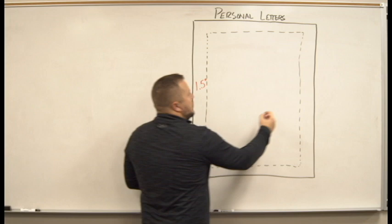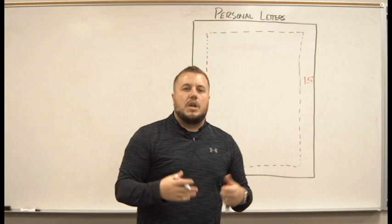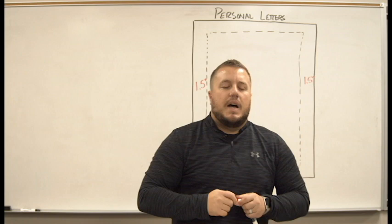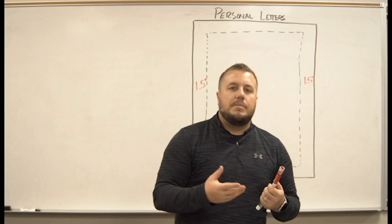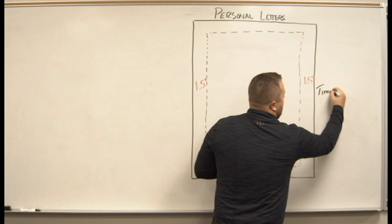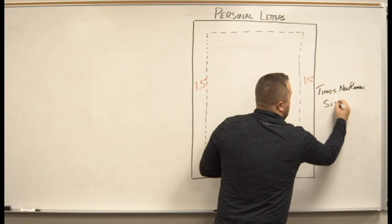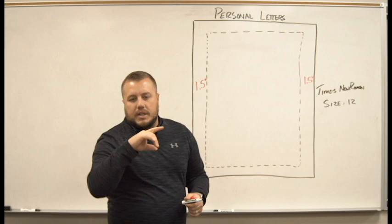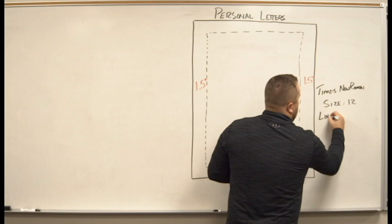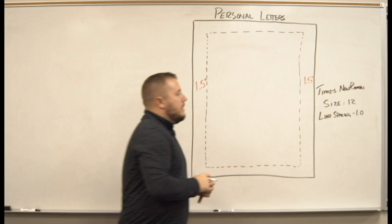We're going to set it up in a way that allows us to just have to worry about typing. The first thing we're going to do is set our left and right margins to 1.5 inches. Top and bottom we'll just leave at 1 inch, but left and right margins 1.5 inches. I'll show you how to do that in Google Docs later in this video. Next, we want to change our text to Times New Roman, size 12. Our line spacing is always going to be 1.0.